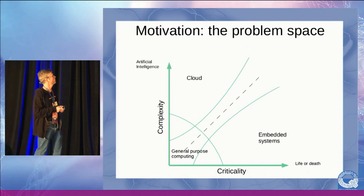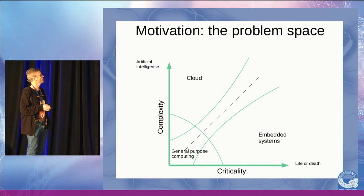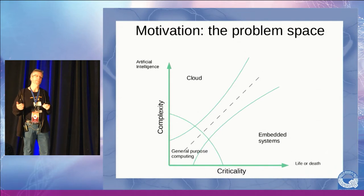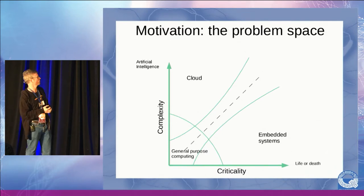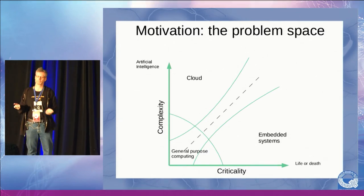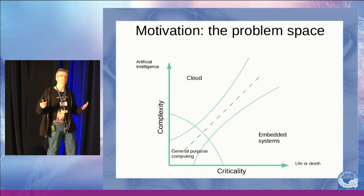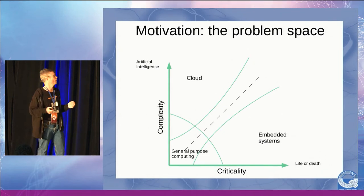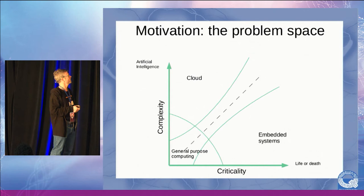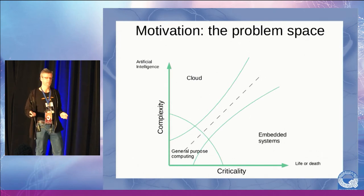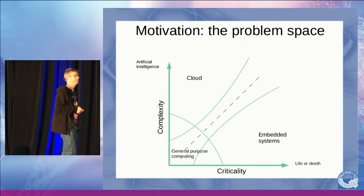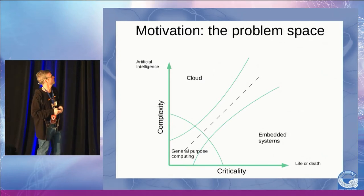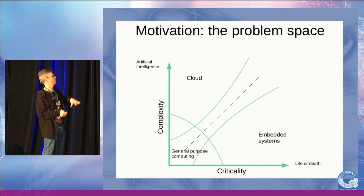The motivation can be represented with a graph. On the x-axis, we have criticality — how critical is it to get this right — ranging from 'not critical' all the way to 'matter of life and death.' On the vertical axis, we have complexity, from the simplest Hello World program up to incredible levels of artificial intelligence. General purpose computing has some elements of both, but is limited in both axes.